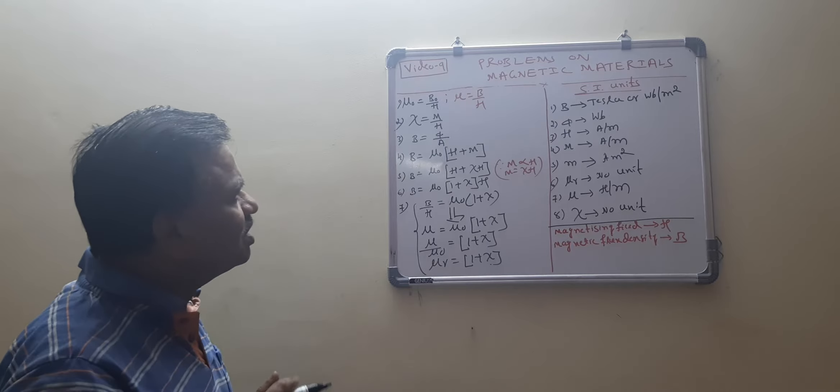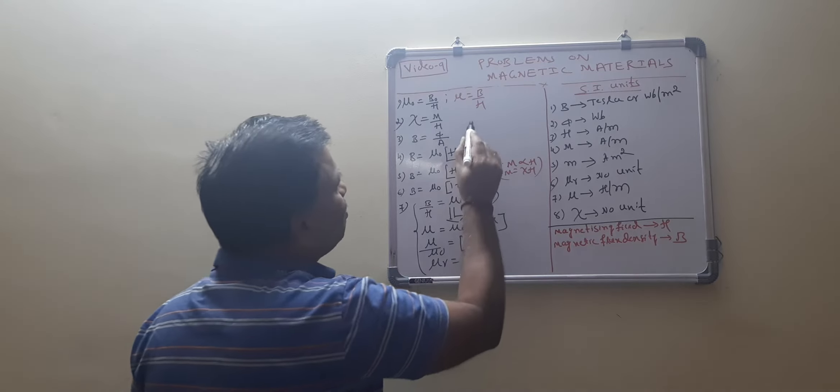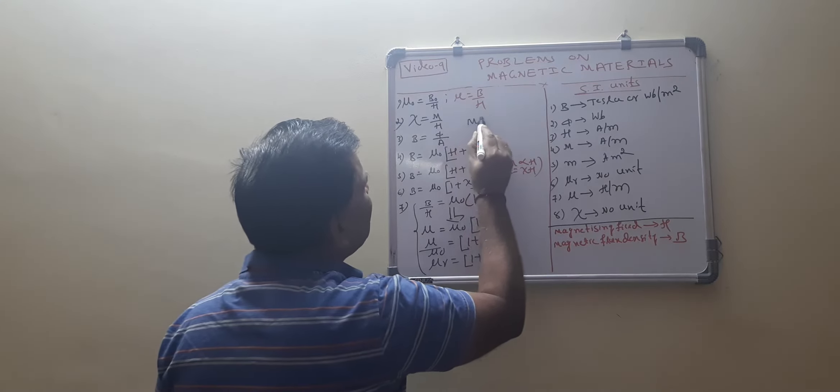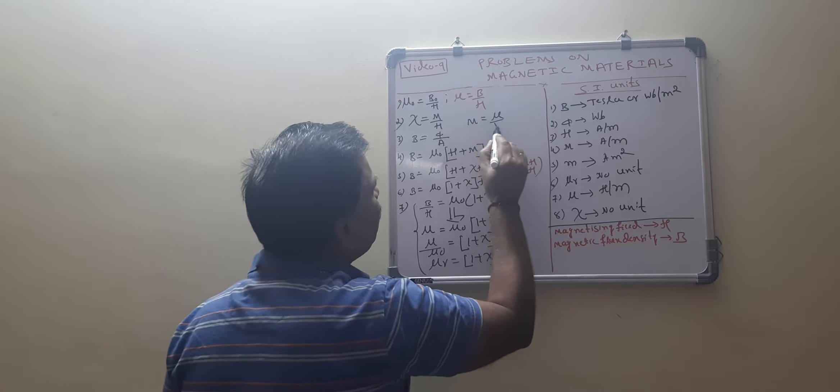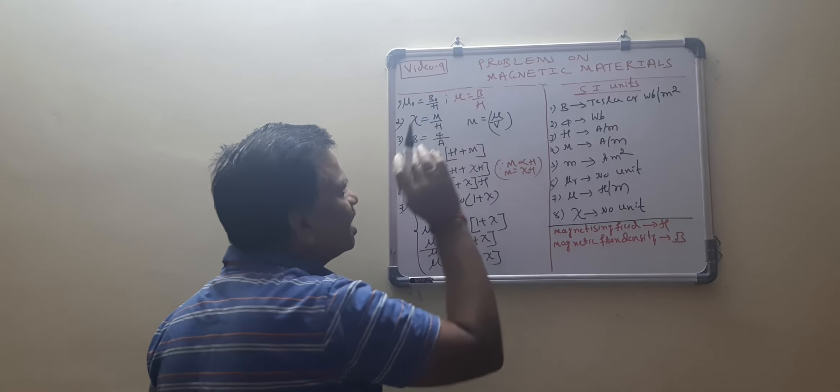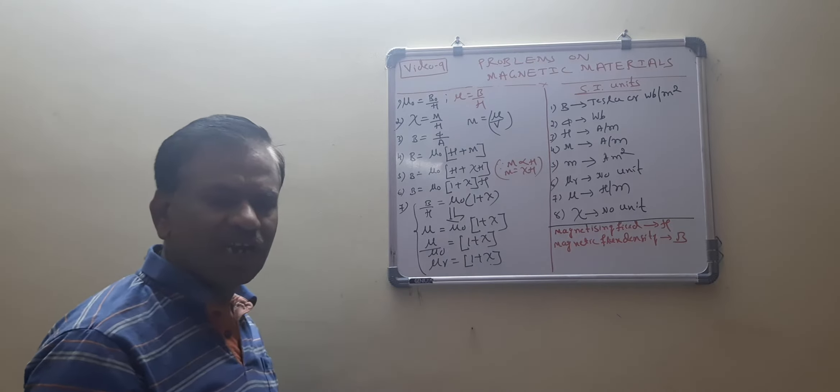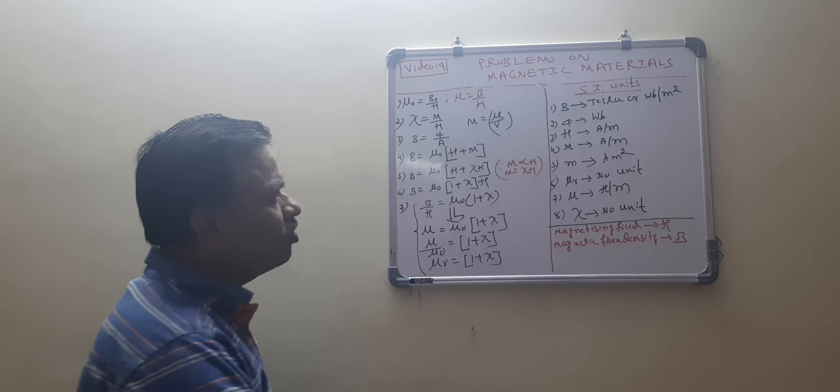And sometimes they will ask you the question here. Magnetization equal to - what is this? Magnetic moment per unit volume. Total magnetic moment per unit volume.